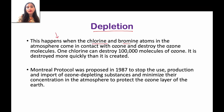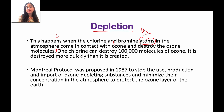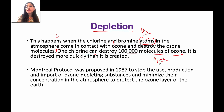That is ozone depletion — when chlorine and bromine atoms contact and destroy ozone (O3). One chlorine molecule can destroy 1,000,000,000 ozone molecules. Ozone does not regenerate as fast as chlorine destroys it, so chlorine is very harmful for the ozone layer.